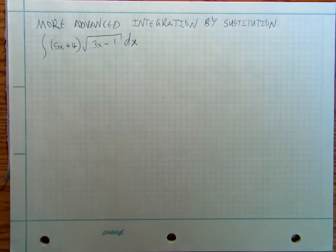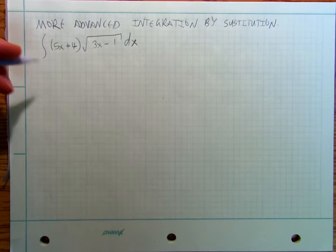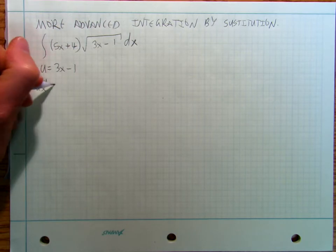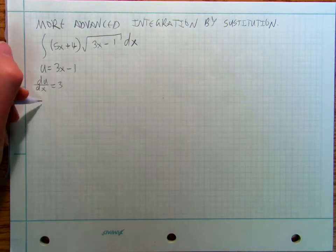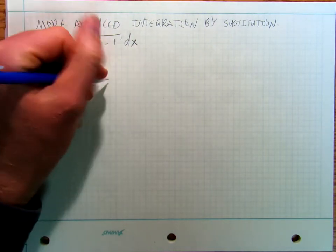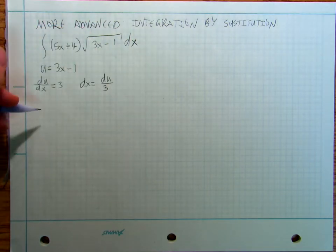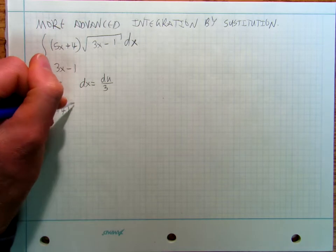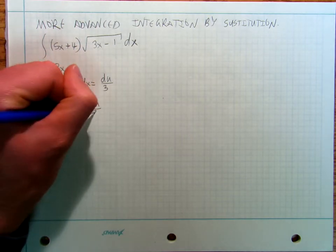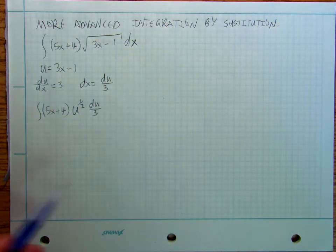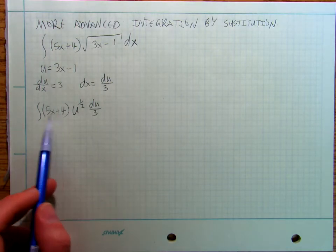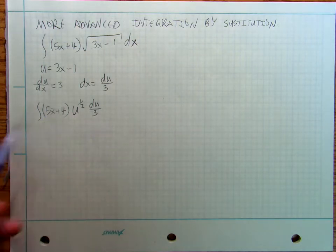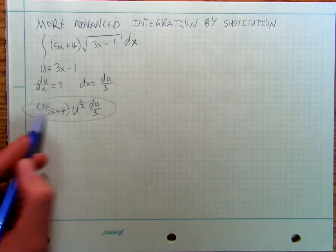So my idea is that, well, there's my inside function: u equals three x minus one. Then I go, well, my du/dx is equal to three, and so dx is equal to du divided by three. So then I go through and I write the integral of five x plus four times u to the one half, du over three — and then I get stuck, because what was supposed to happen is that this part here was supposed to cancel with this part here. So I was just supposed to go boom boom and move on and it was going to be easy, but no, I can't really do that.